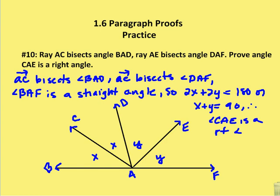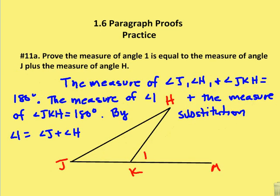In the second question, we are asked to prove the measure of angle 1 is equal to the measure of angle J plus the measure of angle H. So I know that in a triangle, all the angles add up to 180 degrees. And now we're starting with the paragraph proofs. So I'm going to start by making the statement as a paragraph proof, but I'm going to do this verbally. The measure of angle J, angle H, and angle JKH is equal to 180 degrees because the sum of the measures of all the angles in a triangle equal 180 degrees.